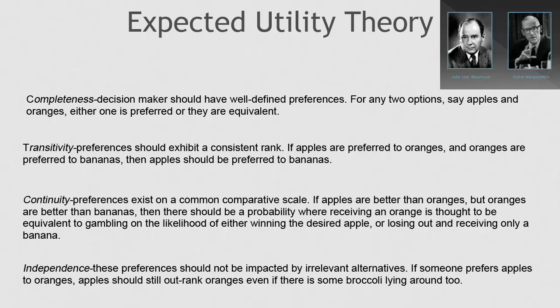Finally, these preferences should not be impacted by irrelevant alternatives. That's the independence axiom. If someone prefers apples to oranges, apples should still outrank oranges, even if there's some broccoli lying around too. Von Neumann and Morgenstern showed that by following these principles, a decision maker would act to maximize his or her own personal utility function.